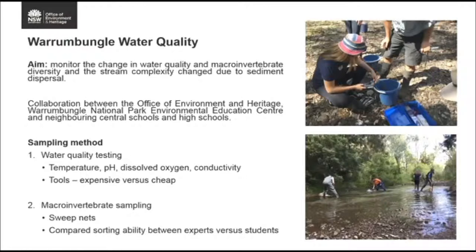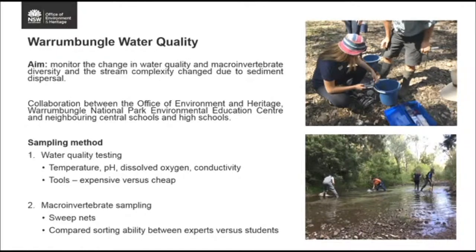This provided an opportunity for water quality monitoring at the park. The aim was to monitor water quality and macroinvertebrate diversity as stream complexity changed due to sediment dispersal. Within Wobblewong Creek National Park there's an environmental education centre, and we leveraged their strong networks with central and high schools neighbouring the park. We travel to the park twice a year in autumn and spring, and students work with OEH aquatic ecologists to collect nutrient samples and water quality measurements — pH, temperature, conductivity, and dissolved oxygen. We also show students a test of accuracy, comparing expensive scientific equipment with more affordable probes and strips.